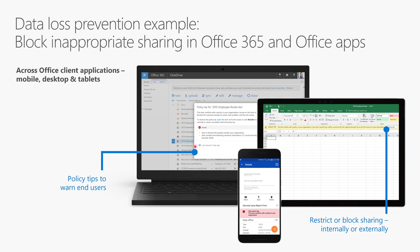When I have a file with a sensitivity label applied to it — so it's encrypted and classified — if I go into OneDrive and right-click, choose share, and try to share with somebody outside the organization, it's going to be blocked. Through my policy I could allow you to override it, but that gets logged in the audit log. This allows me to block that data from being transmitted outside that Microsoft 365 tenant.